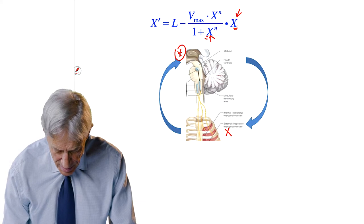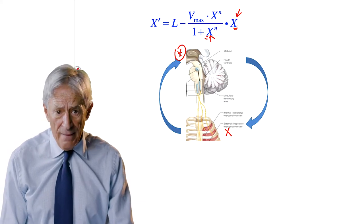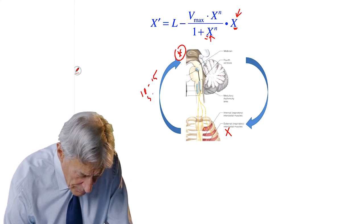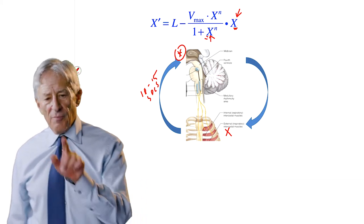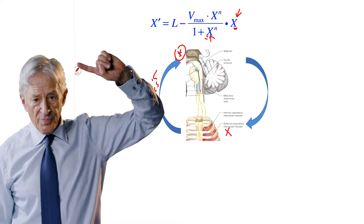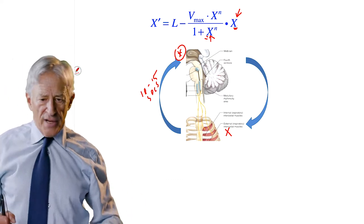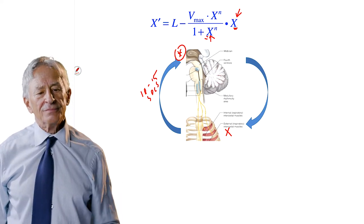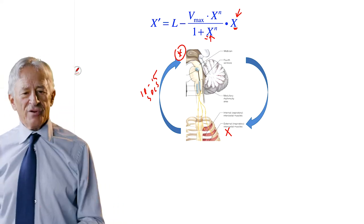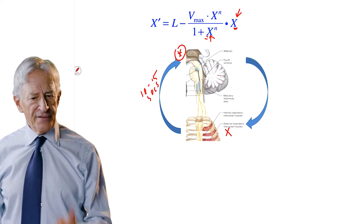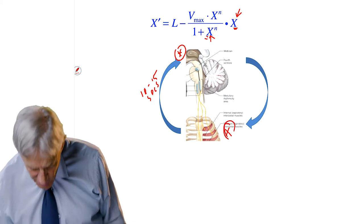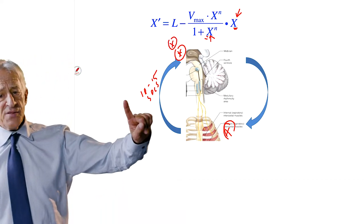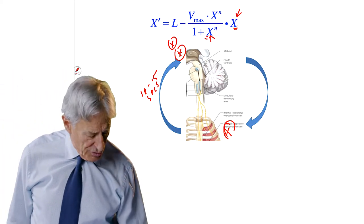X at the lungs is not the same as X at the brainstem, because it took 10 or 15 seconds for the blood to get from the lung up to the brainstem. And so the brainstem is trying to control the system based upon outdated information. That's only 10 seconds outdated, and it's a little bit of an exaggeration to call it outdated, but it is old information. What's being done is being done to this quantity X. But what's being done depends upon this quantity X. And they are not the same.